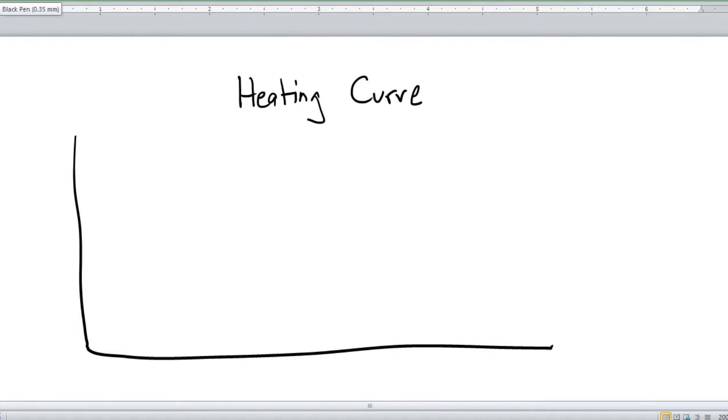Now before we get started, I want to point out that this particular graph will actually hold true for every single substance that we know of. The numbers on the side of each axis might change, or the time spent in each of the different sections of the graph might vary, but the overall shape is exactly the same.